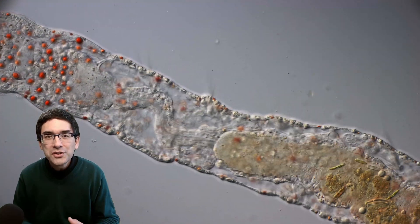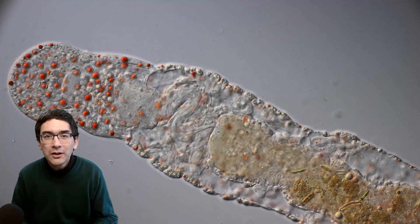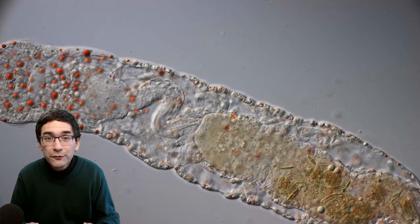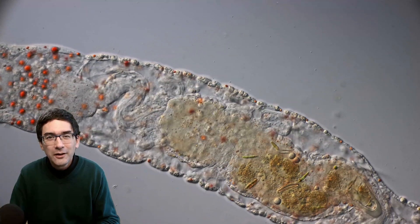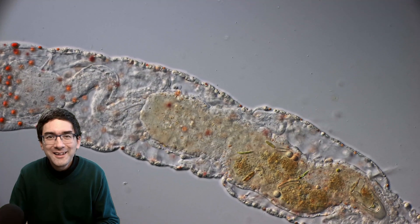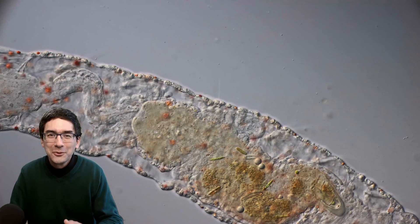The worm uses those bristles to move forward because they can be used to anchor into the ground to increase friction so that it's able to push itself forward. On my smooth microscope slide, the worm did indeed have some problems pushing itself forward.